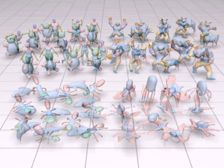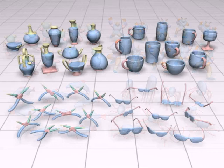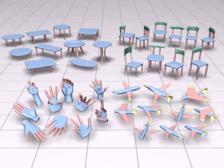We have tested our approach on different object categories. Here are their co-segmentation results. We can see that our algorithm works well for these categories of models with various shape variations.